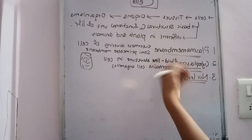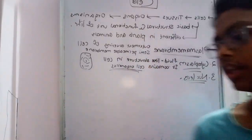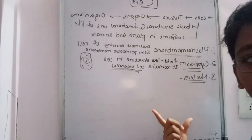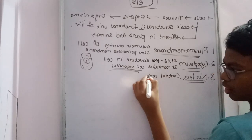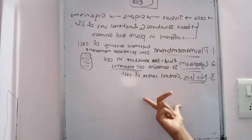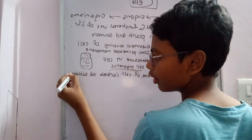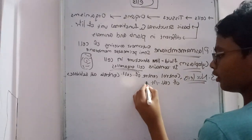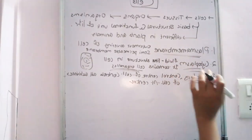Cell organelles will be a separate topic because every cell organelle has its own function. Before going into that, we will see the function of the nucleus. The nucleus is like the brain of the cell — it controls all the activities of the cell and is present at the center.